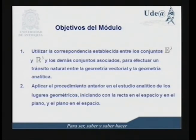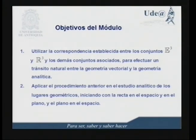Los objetivos que nos vamos a proponer en el desarrollo de este módulo son los siguientes. Primero, utilizar la correspondencia establecida entre los conjuntos E3 —conjunto de los vectores libres— y R3 —conjunto de las tripletas de componentes reales— y los demás conjuntos asociados, para efectuar un tránsito natural entre la geometría vectorial y la geometría analítica. En segundo lugar, aplicar el procedimiento anterior en el estudio analítico de los lugares geométricos, iniciando con la recta en el espacio y en el plano, y obviamente el plano en el espacio.